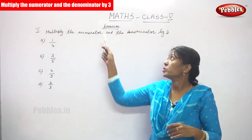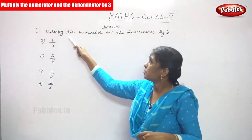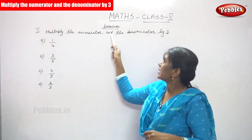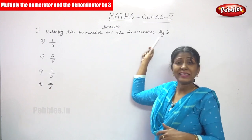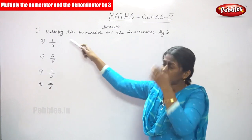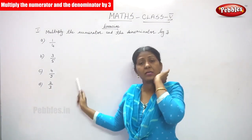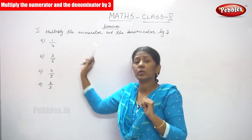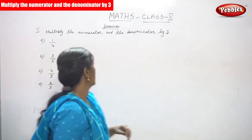Now, we are going to do the exercise — multiply the numerator and the denominator by 3. These are the examples. First, we have to work out the first exercise.